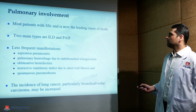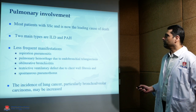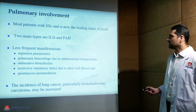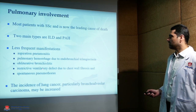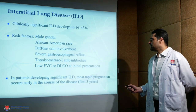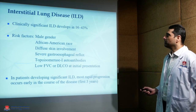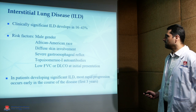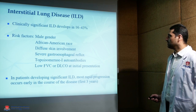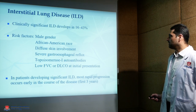Pulmonary involvement is seen in most patients with systemic sclerosis and is the leading cause of death. The two main types are interstitial lung disease and pulmonary arterial hypertension. Clinically significant interstitial lung disease develops in around 16–40% of patients. Risk factors include male gender, African-American race, diffuse skin involvement, severe gastroesophageal reflux, topoisomerase-1 autoantibodies, and low forced vital capacity or diffusion capacity of the lung.